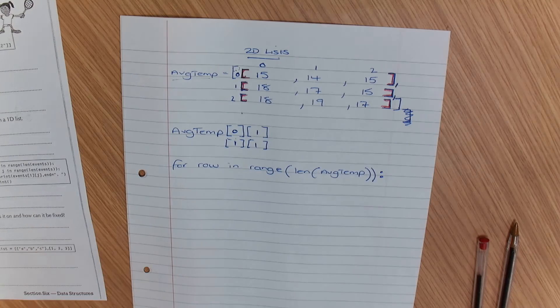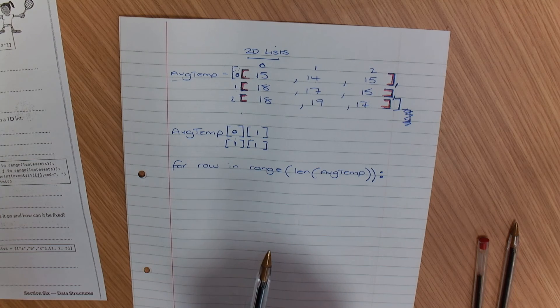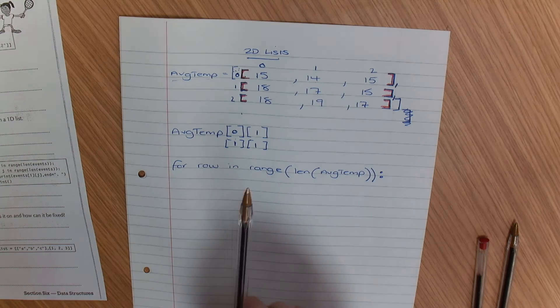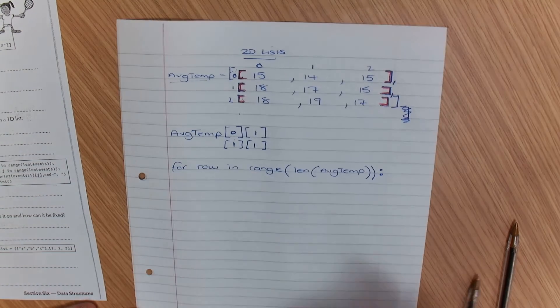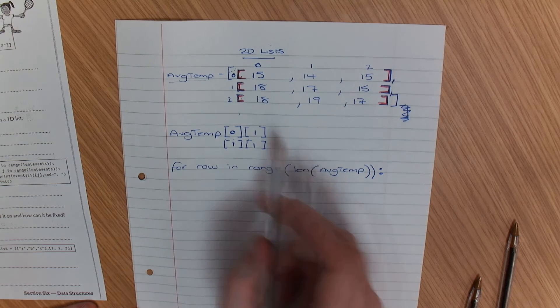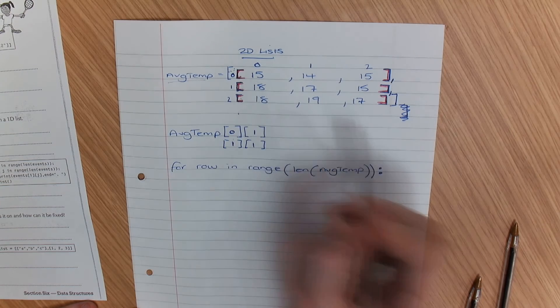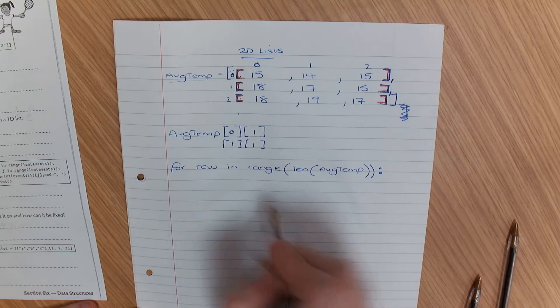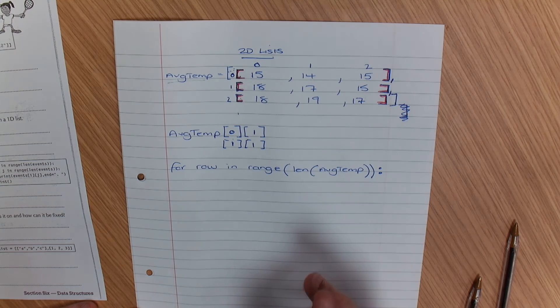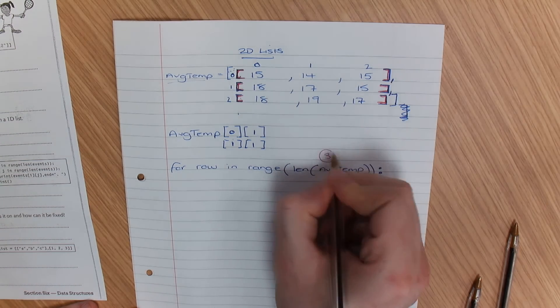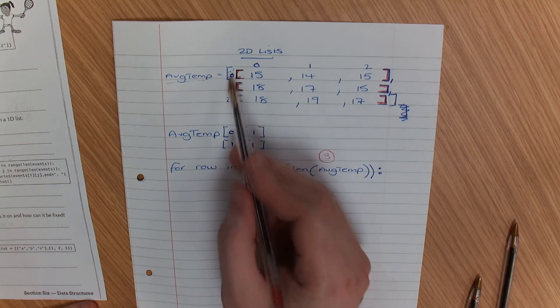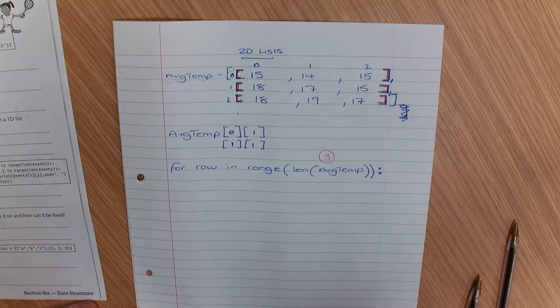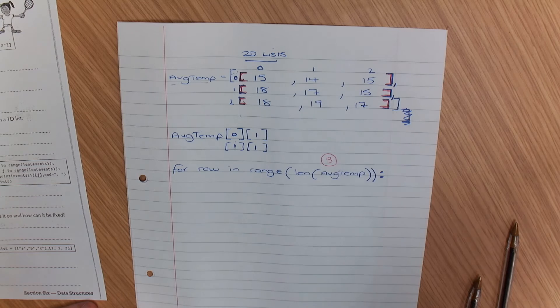That is going to give me three, because it's going to tell me that there are three rows. One, two, three. So the row in range of this whole 2D array would give me the number of rows I've got. So that would be three in this case. Don't get confused by the index, because len is how many iterations, and it's inclusive of the first one.